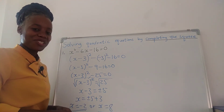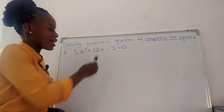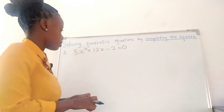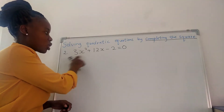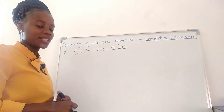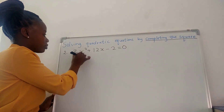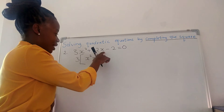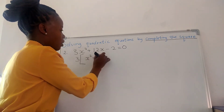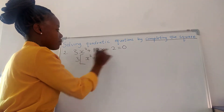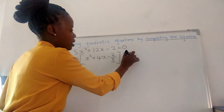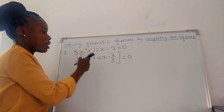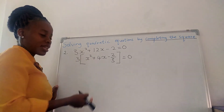Now let's get to number 2. Number 2 we have 3x squared plus 12x minus 2 equals to 0. We're going to complete the square then solve for x. Now the coefficient of x squared is not 1, so we're going to factor out 3. Inside we're going to be left with x squared plus 4x minus 2 over 3.